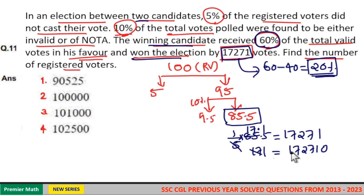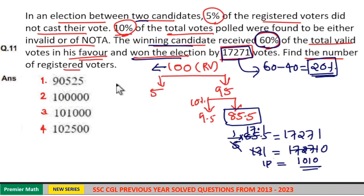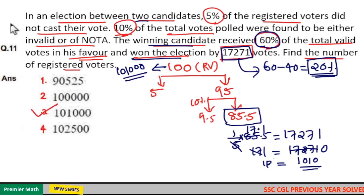Now 171 goes 1 time in 172 remaining 1. 171 goes 1 time in 171 remaining 0. So 1 part is equal to 1010 means here total registered vote is equal to 100 part. So 100 part is equal to 1010 into 100. 101,000 is your answer. So option 3 is your answer.